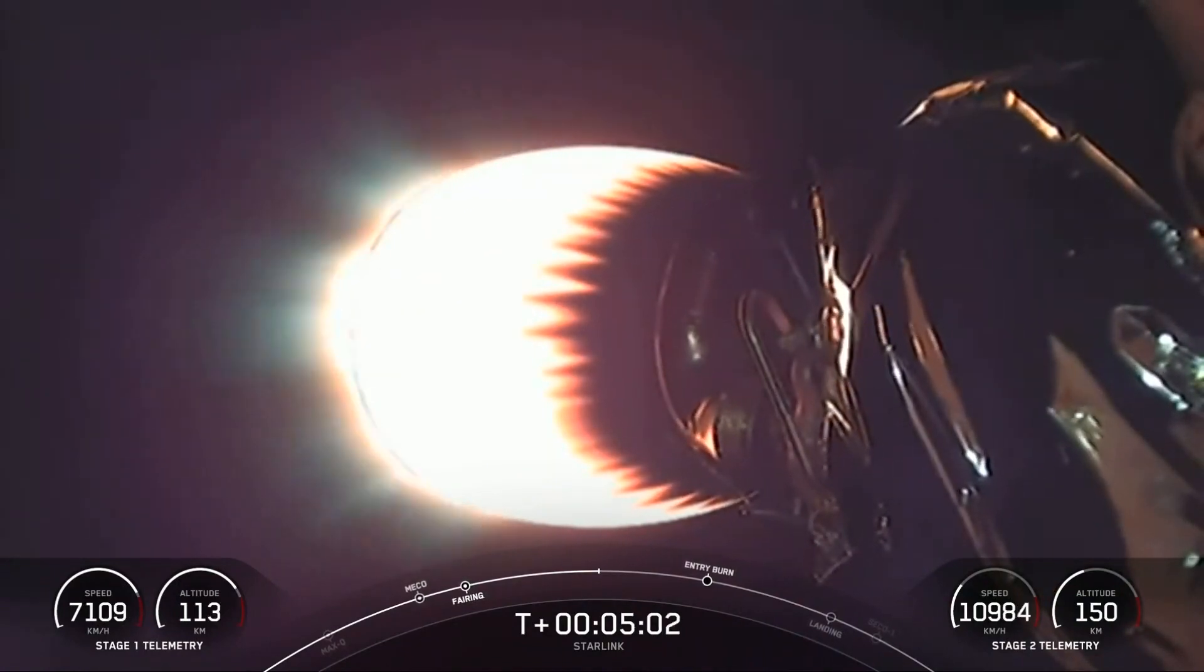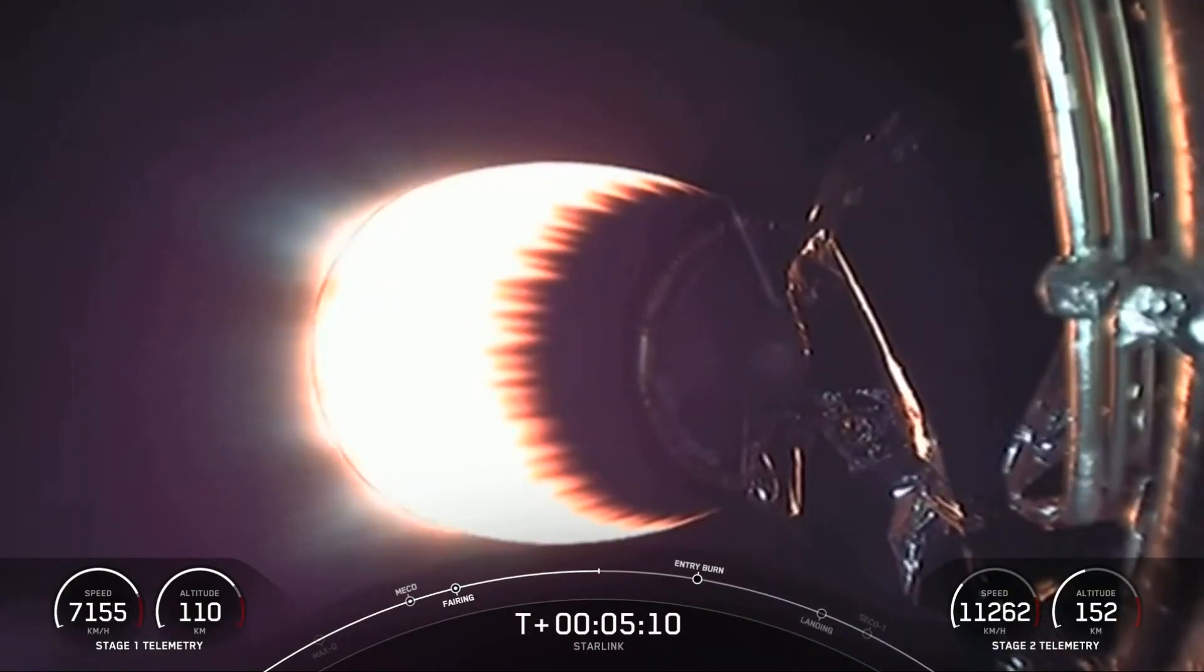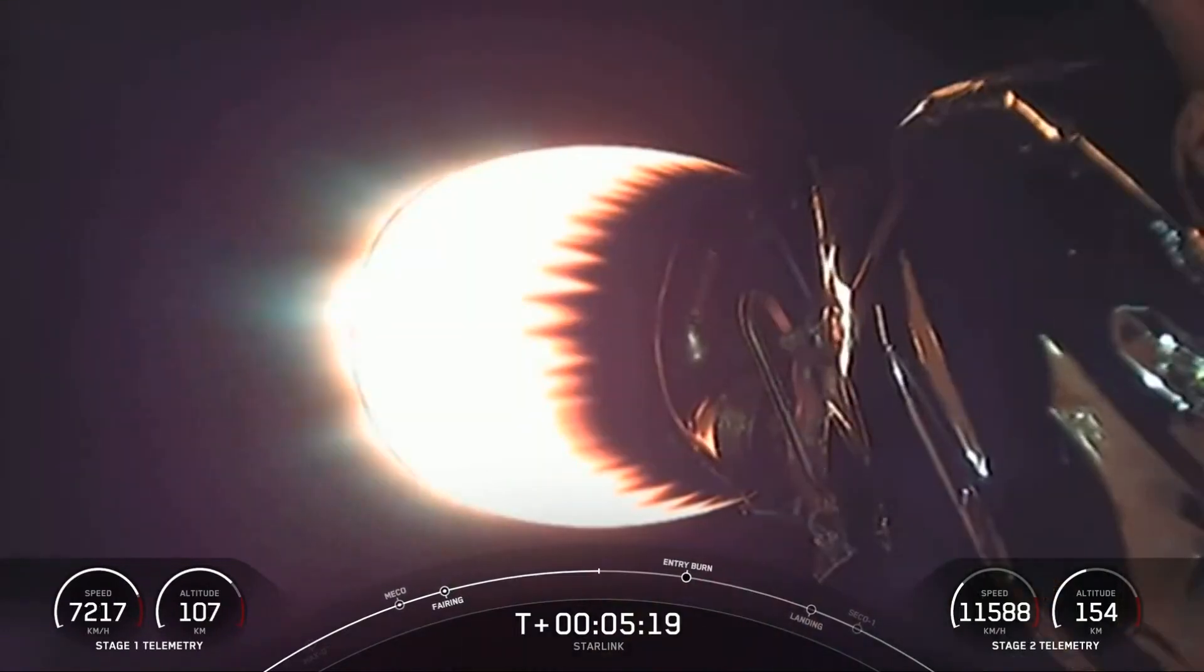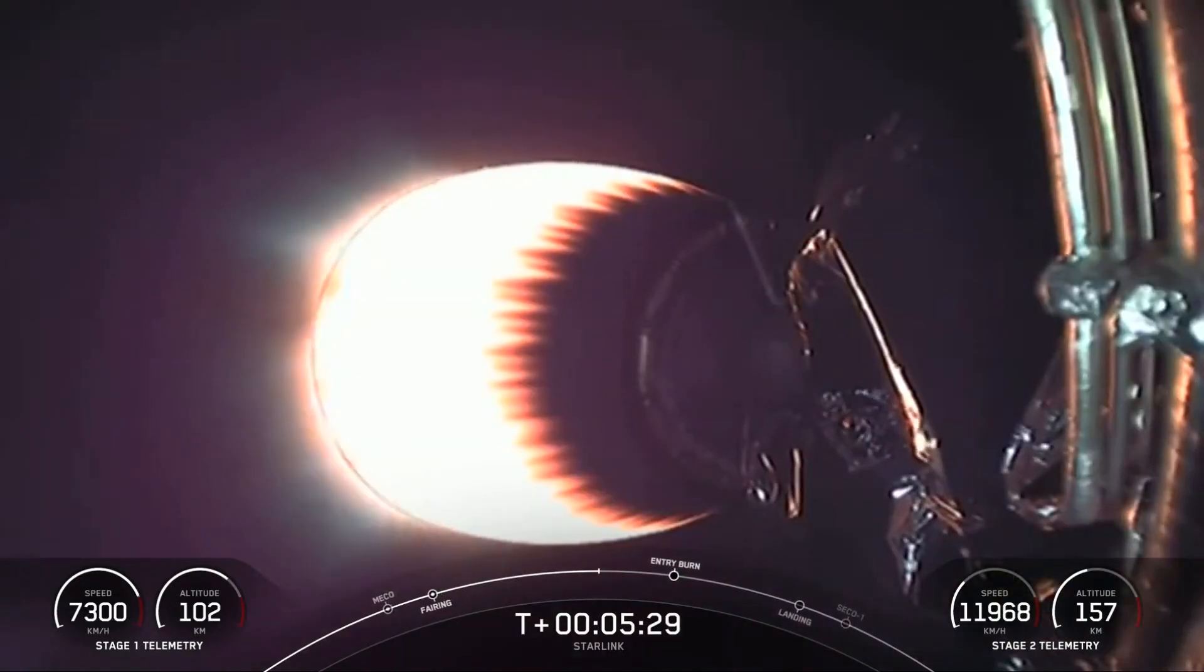For reference, most satellites are actually in GEO or geostationary orbit, which is over 1,000 kilometers above the surface of the Earth. And the reason that we have our Starlink satellites in this lower orbit is that it reduces the round trip time that it takes for data to travel between the user and the satellite, reducing what is known as latency and improving performance in activities like video calls and online gaming.